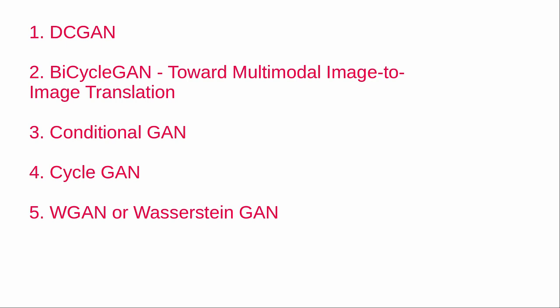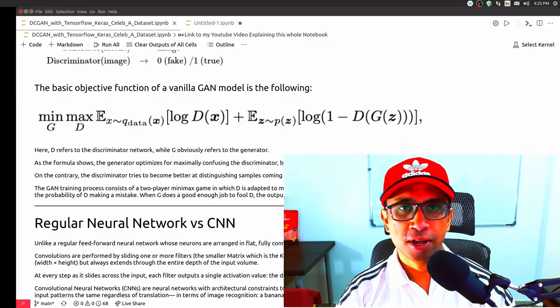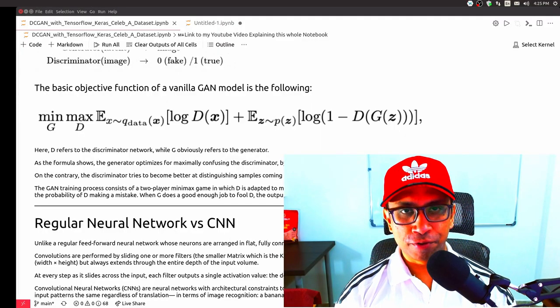In this GAN series, I made quite a few individual videos previously. This video is a combination of all of them, plus some small parts I had missed. The architectures covered here are: DC-GAN, Bicycle GAN, Conditional GAN, Cycle GAN, and lastly W-GAN or Wasserstein GAN. I implemented all of them with PyTorch from scratch. The GitHub link for each is given in the description.